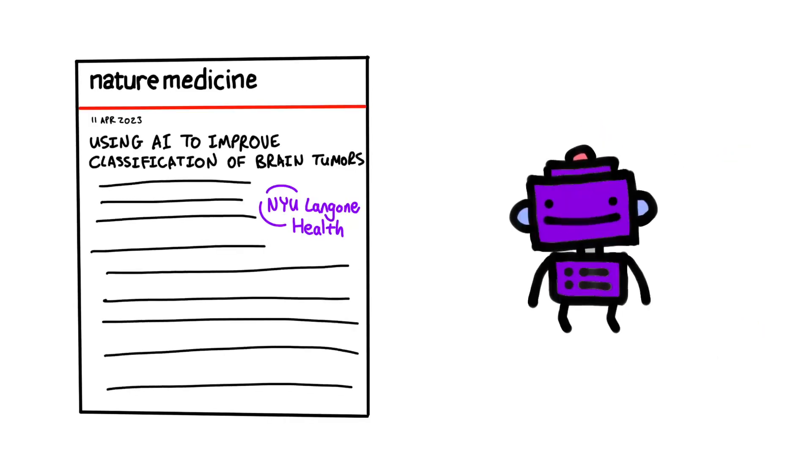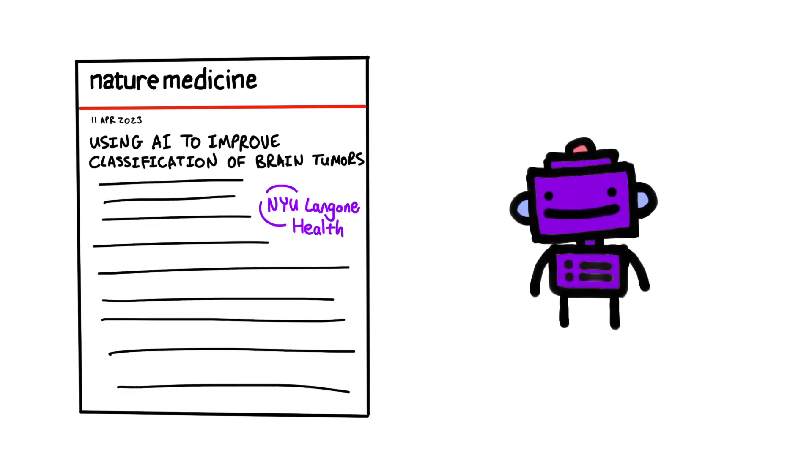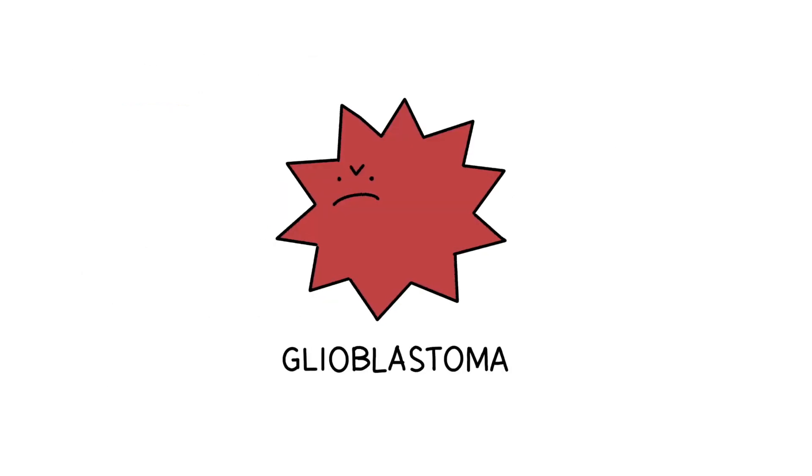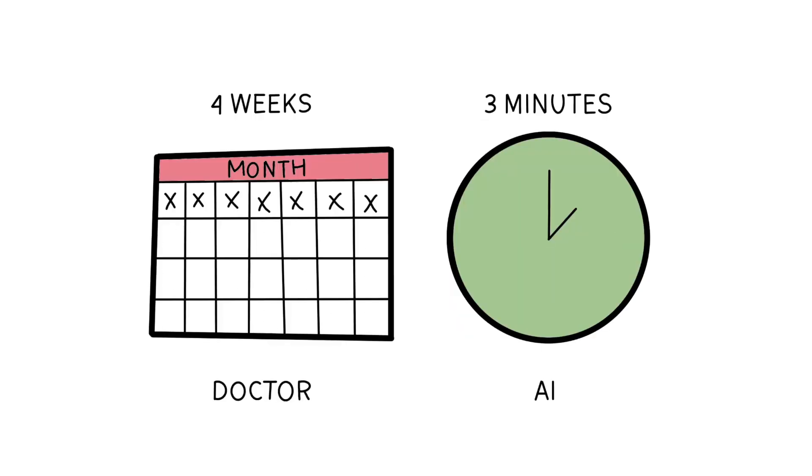One new AI system at NYU Langone Health has been specifically trained to identify an aggressive type of brain cancer called glioblastoma. It's able to determine if there is an early stage cancer in tissue by simply looking at brain images and noting the patterns that are there. This diagnostic process, which usually takes up to about 4 weeks for medical professionals to analyze brain images and come up with a conclusion, now only takes a mere 3 minutes to complete.